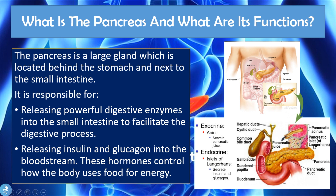The pancreas is an exocrine gland because it secretes pancreatic juice which is made up of digestive enzymes, and it also has an endocrine function because it secretes insulin and glucagon which control the levels of blood sugar in the body.